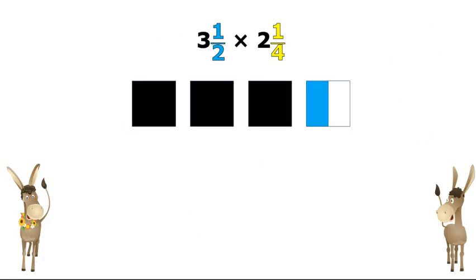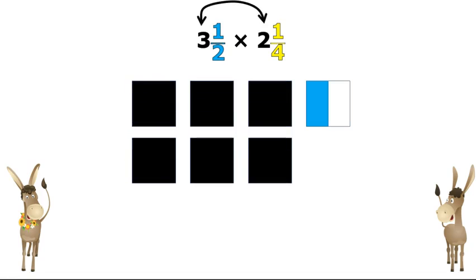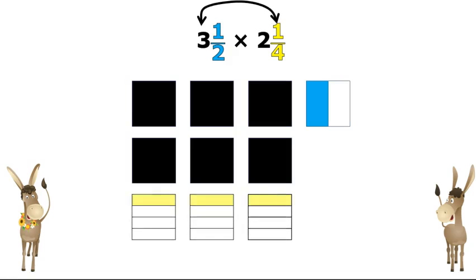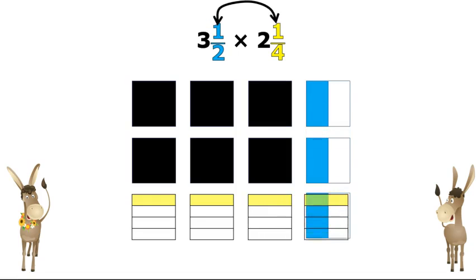Here's another example. A mixed number times a mixed number. Three and a half times two and a fourth. First, I'll multiply the three times the two and get six. Then I'll multiply the three times one-fourth, then the half times two, then the half times a fourth.